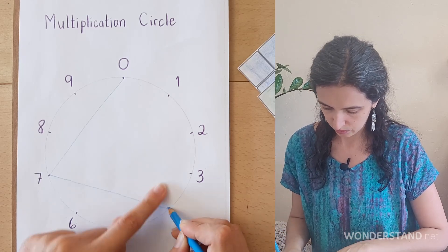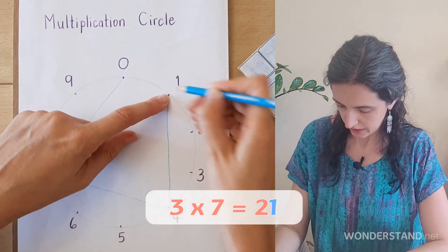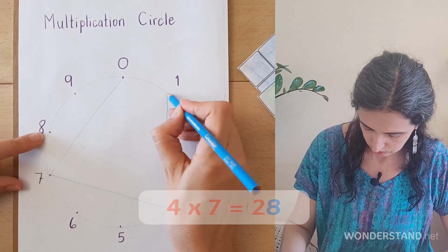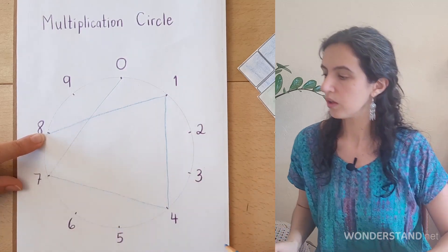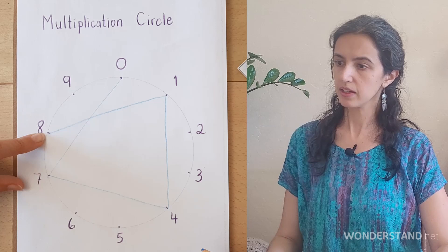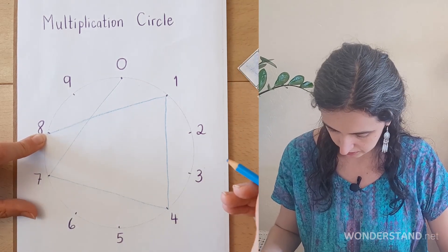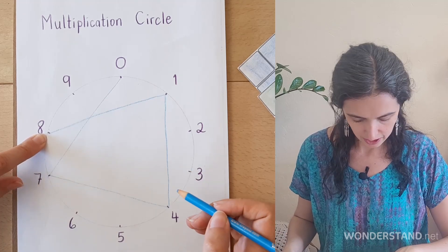3 times 7 is 21. 4 times 7 is 28. Now if I stopped and asked you, oh my, what shape is this? You would say, Miss Karim, this is a completely random shape. But patience, patience. We might discover something. Where were we? 5 times 7.